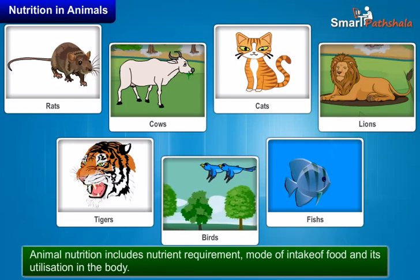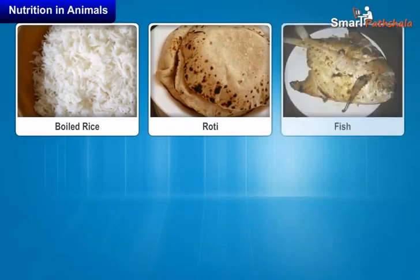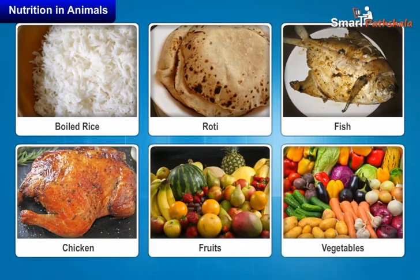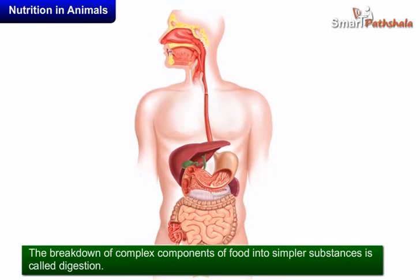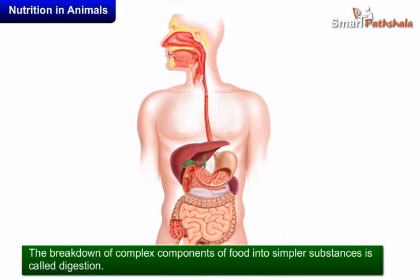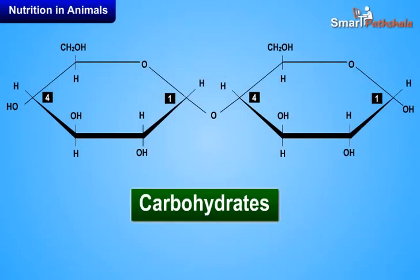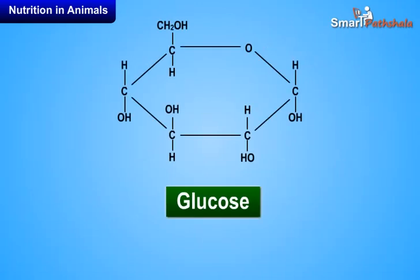Now let us know about digestion. The food we intake consists of many components like carbohydrates, proteins, fats, vitamins, minerals, etc. The breakdown of complex components of food into simpler substances is called digestion. For example, carbohydrates are complex substances and they cannot be utilized as such, so they are broken down into simpler substances like glucose and are utilized.